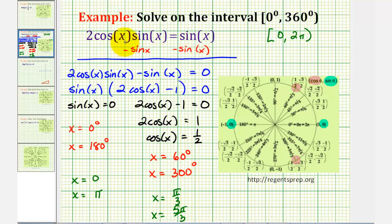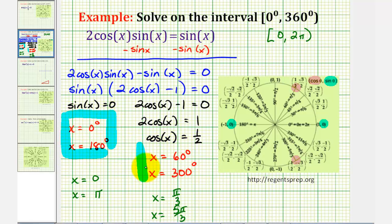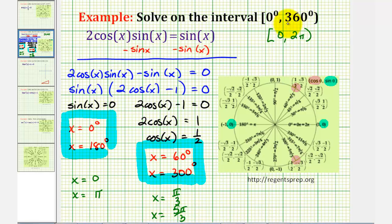Now since the interval was given in degrees, we should give our solutions in degrees. So our solutions would be zero degrees, 180 degrees, 60 degrees, or 300 degrees. We would only give the solution in radians if we were given the interval in radians. I hope you found this helpful.